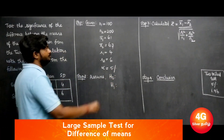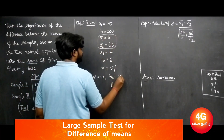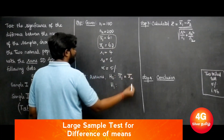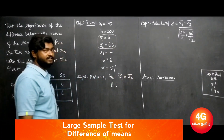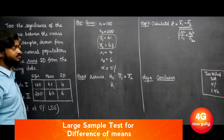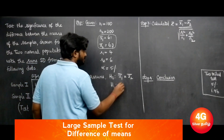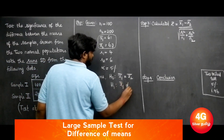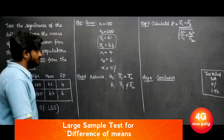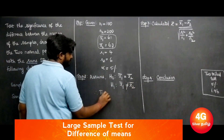First, assume the null hypothesis: x̄1 equals x̄2. We can check the difference and test the difference. The alternative hypothesis is x̄1 is not equal to x̄2 — we can test the difference.